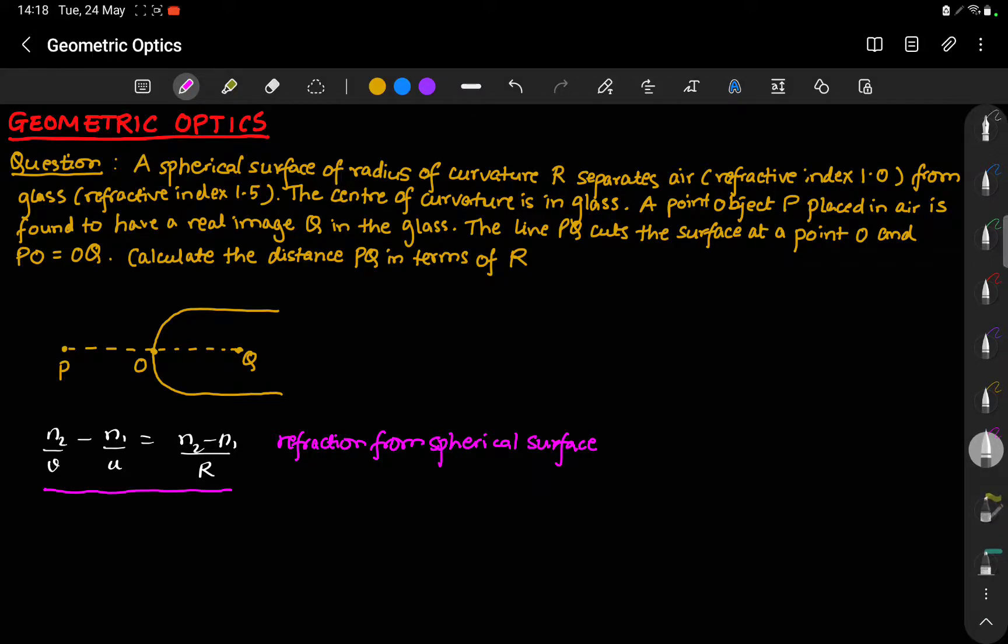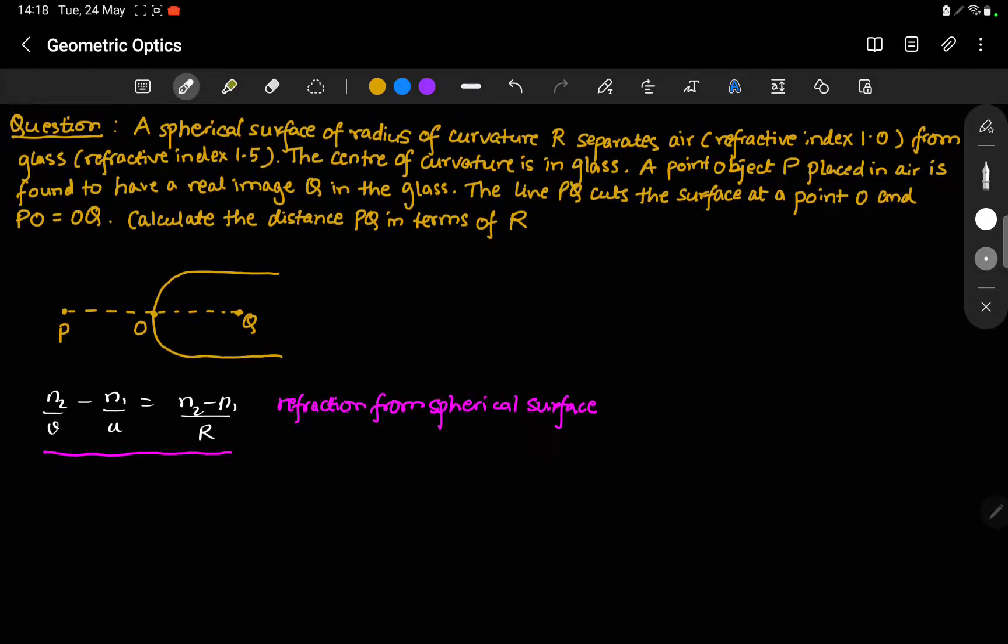Using this formula, we will solve our question. In our question, we are given that N1 is equal to 1.0, that is air. The subscript 1 denotes the starting medium where the object is placed and the subscript 2 denotes the medium in which the image is placed. So N2 over here is 1.5, this is inside glass.